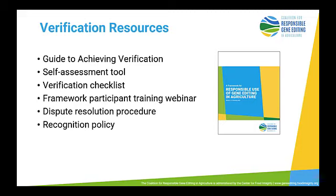There's a self-assessment tool where you can go through within your own organization, a verification checklist which helps you prepare, Framework Participant Training webinars, and a dispute resolution procedure — so if you believe you should have achieved verification and the verifier doesn't align with your perception of the objective evidence, there's a procedure for resolving that. There is also a recognition policy: a formal recognition from the Center for Food Integrity that your organization has successfully completed verification and is operating in conformance with the framework. That material can be used on your website and in marketing, but it cannot be used on product labeling.